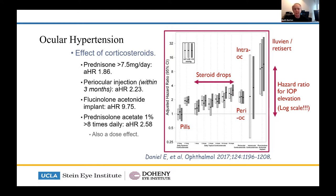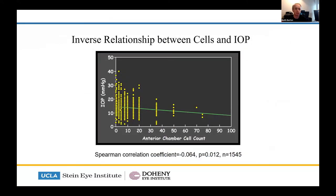Steroids do increase the pressure. Systemic steroids roughly double the IOP risk if more than 7.5 mg per day — less than 7.5 mg doesn't seem to do much, which makes sense because your body's physiological cortisol level is roughly equivalent to 7.5 mg of prednisolone a day. It's the higher levels that are more important. There is also an inverse relationship — though not directly proportional — between cells and pressure.